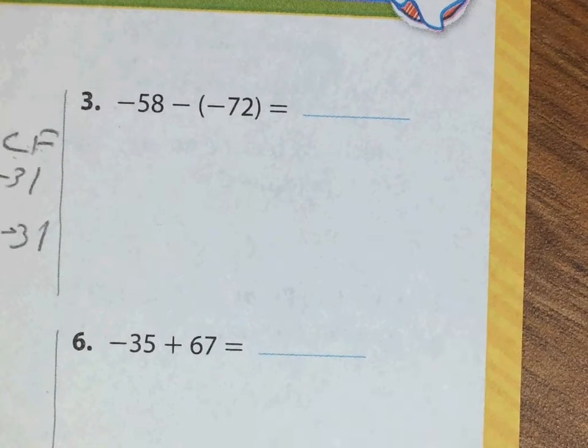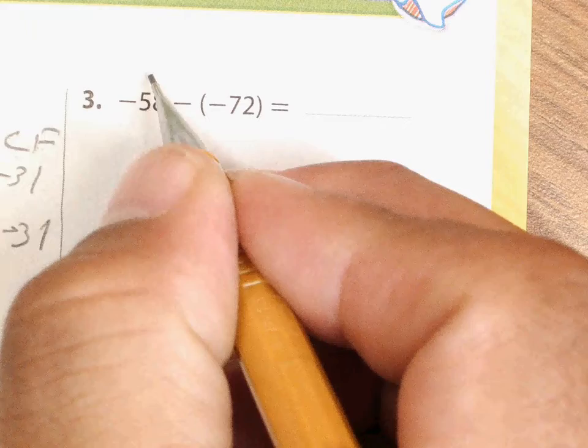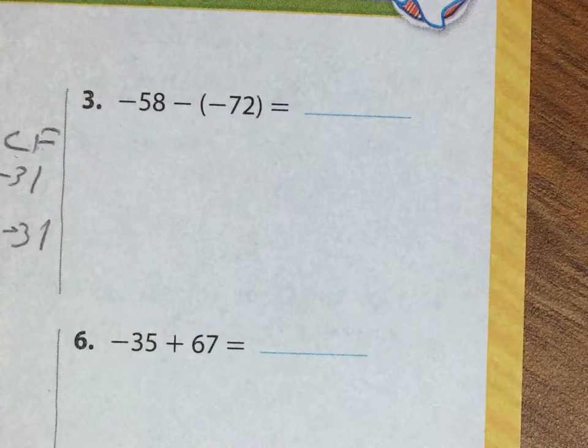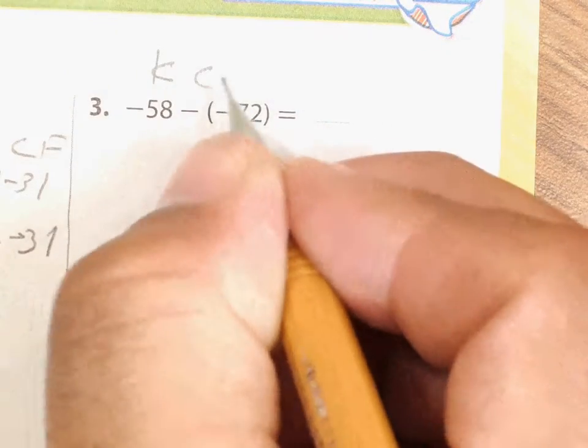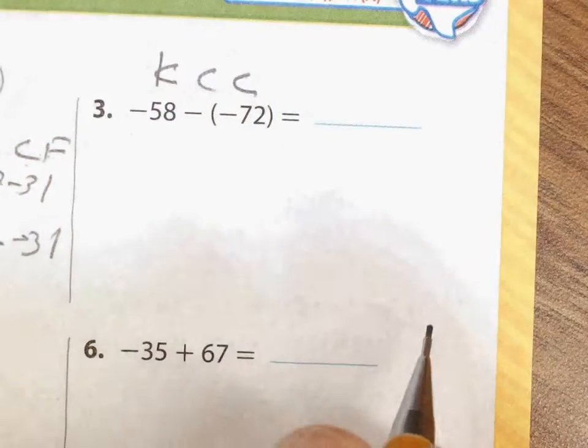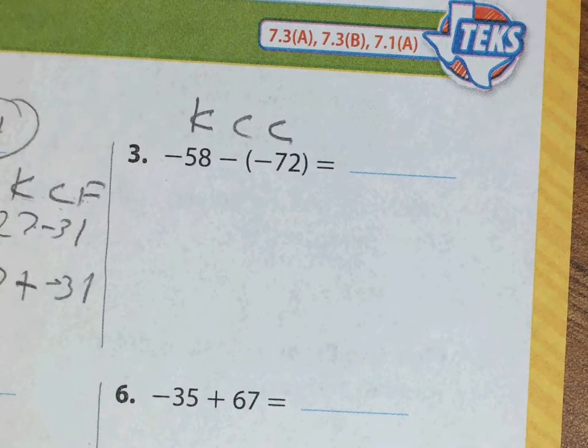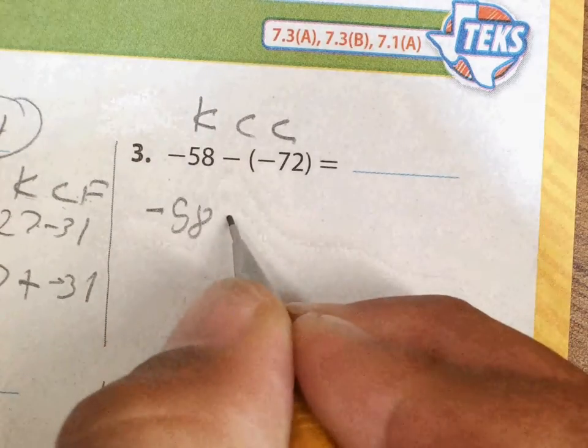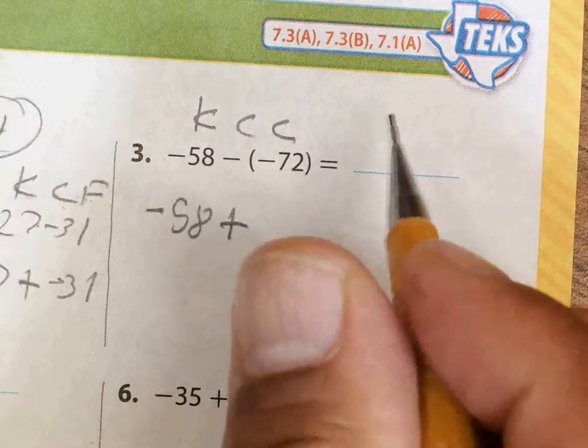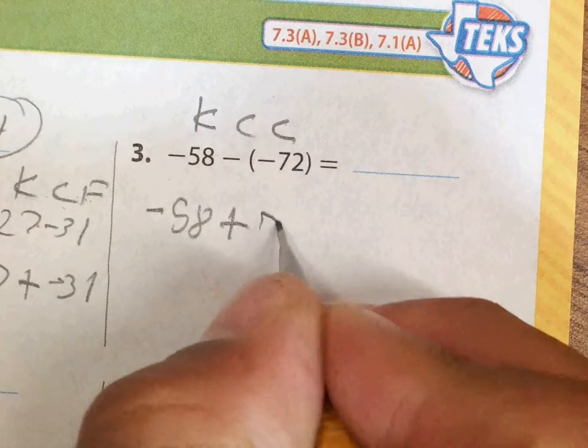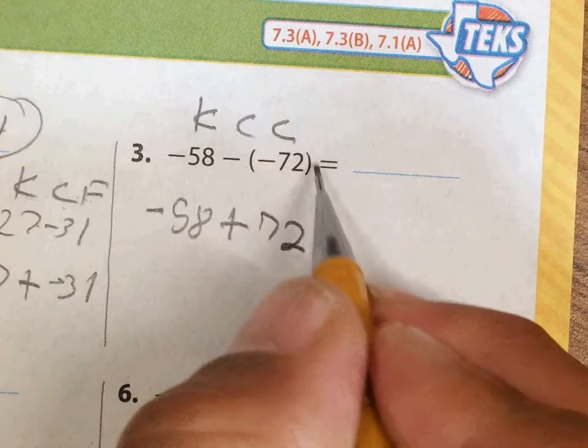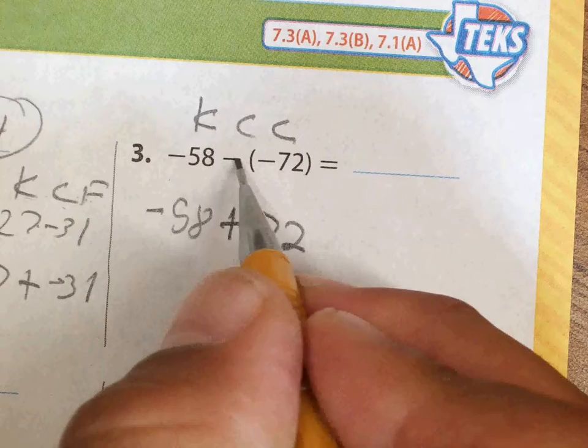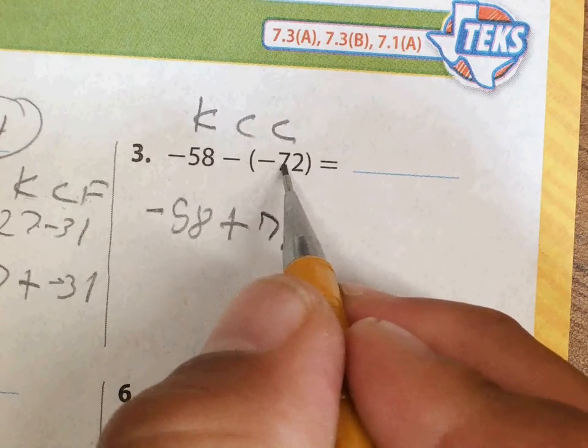Again, the operation is subtraction, so we'll use our strategy. If it starts with subtraction, you can always use KCC or KCF. So I'm gonna keep, change this to plus, and change this to a positive 72. Remember, the parentheses here are only to make sure you can see the difference between this is the operation and this is the negative symbol.